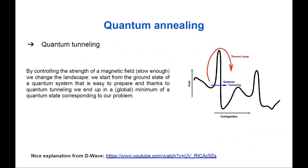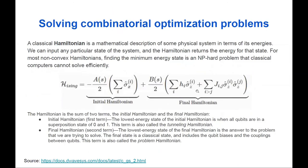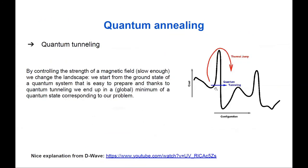The reason the quantum state may stay in the ground state is the phenomenon called quantum tunneling. When we modify the strength of the magnetic field, we modify the Hamiltonian and its energy landscape. Assuming the system stays in the global minimum ground state at all times, thanks to quantum tunneling our system may jump over an energy barrier and end up in the ground state again. That's basically the idea of quantum tunneling in this context.